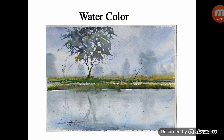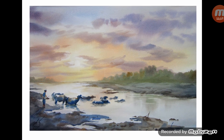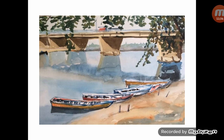Watercolor paints are made of pigments suspended in a water-soluble vehicle. The traditional and most common support for watercolor painting is paper, though other supports include fabric, wood, and canvas. Here are examples of watercolor landscape paintings.